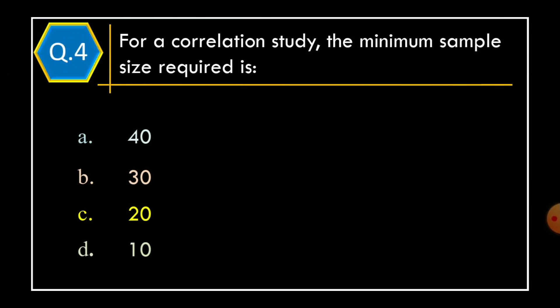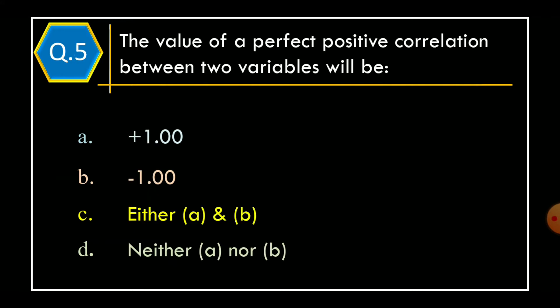Question 4. For a correlation study, the minimum sample size required is: Option A, 40; Option B, 30; Option C, 20; Option D, 10. The correct option is Option B, 30.